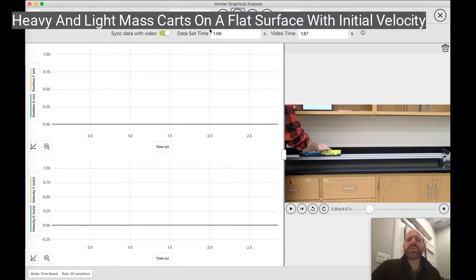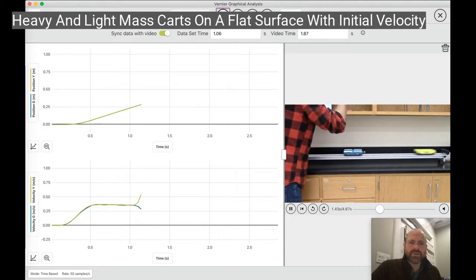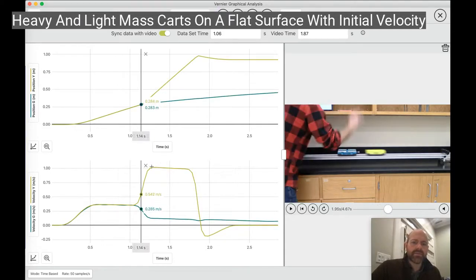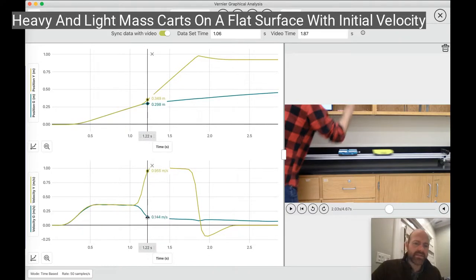Our final explosion scenario here, we're on that flat surface. I'm giving them an initial velocity. But this time mass one, the green cart is going to be the more massive one. You can see that here. So if we go ahead and jump back and watch this, give them a little push, explode them. Notice the light cart out in front gets the big change in velocity, whereas the green one just slows down a bit.